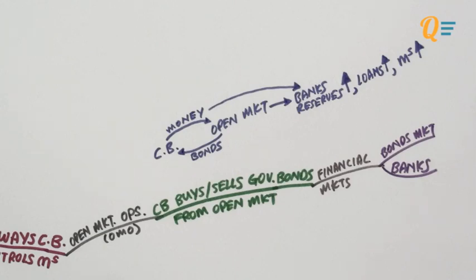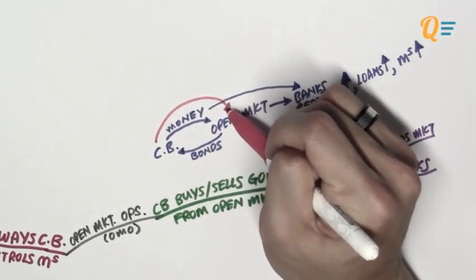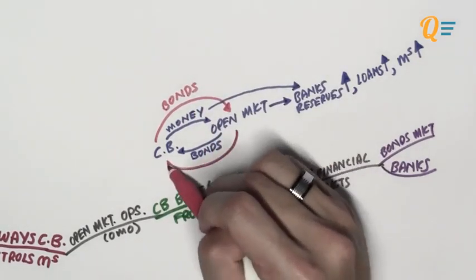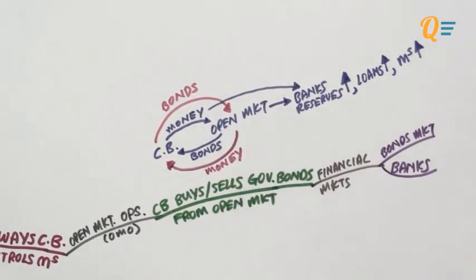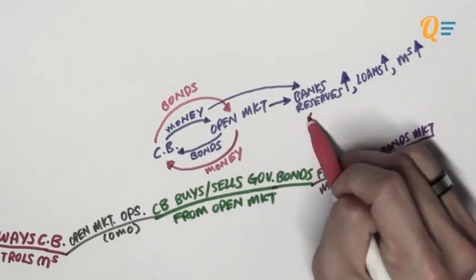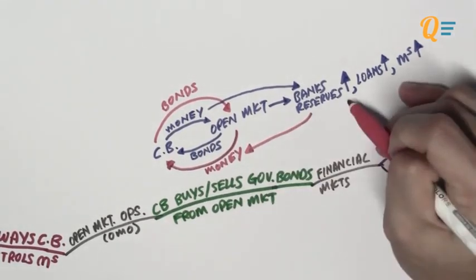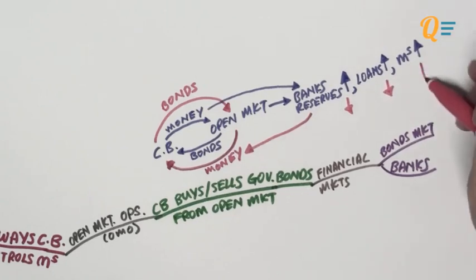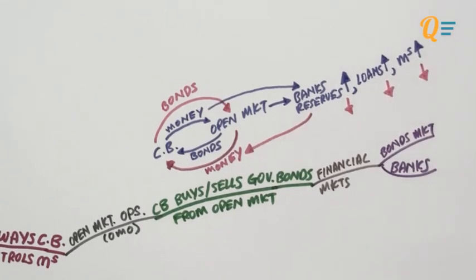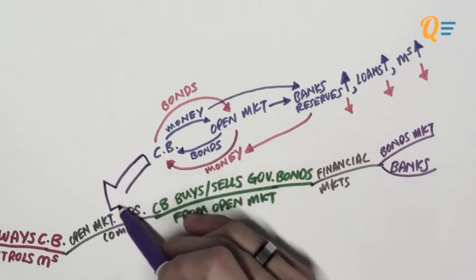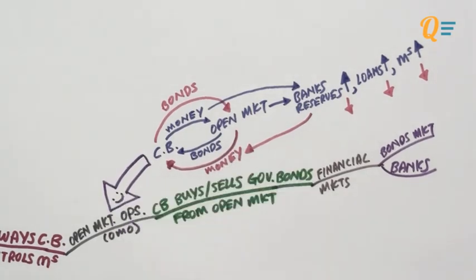Conversely, when the central bank sells government bonds to the open market, the open market pays the central bank money, bank reserves decrease, loans decrease, and therefore the money supply decreases. The act of the central bank selling government bonds is a form of contractionary monetary policy.